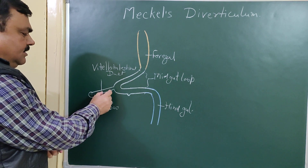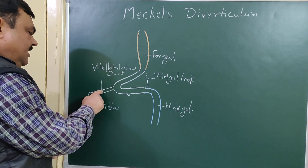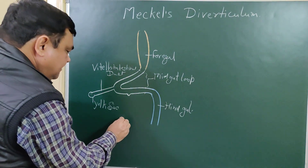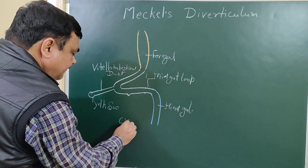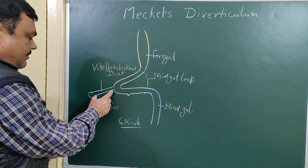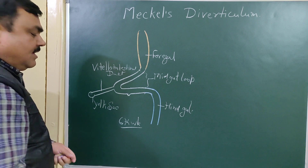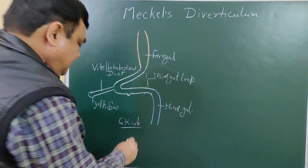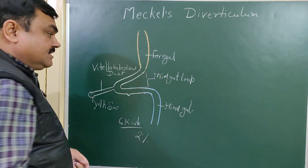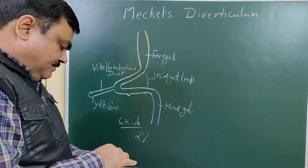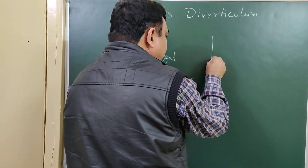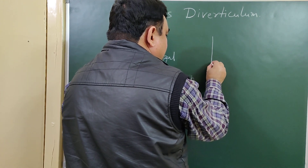The proximal part of the vitelointestinal duct persists in about 2% of cases. Normally, during the 6th week of intra-uterine life, this portion disappears. But in about 2% of cases, the proximal part persists. Here is the anterior abdominal wall and the position of the umbilicus.